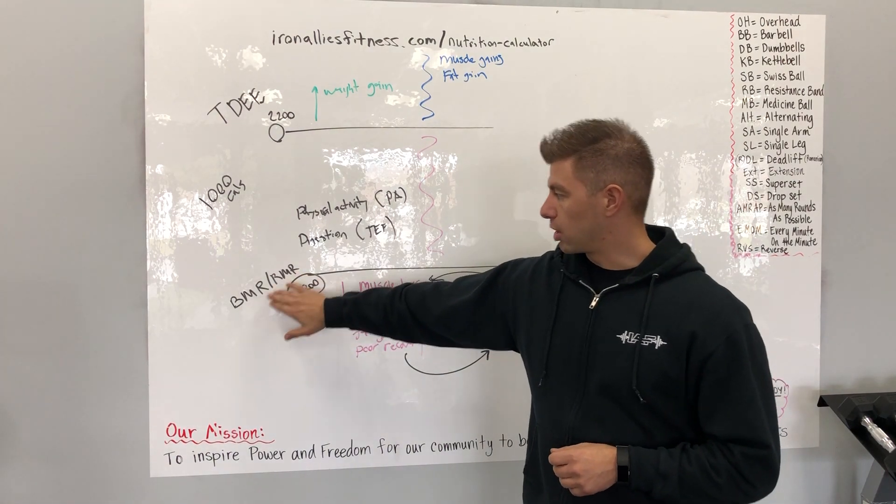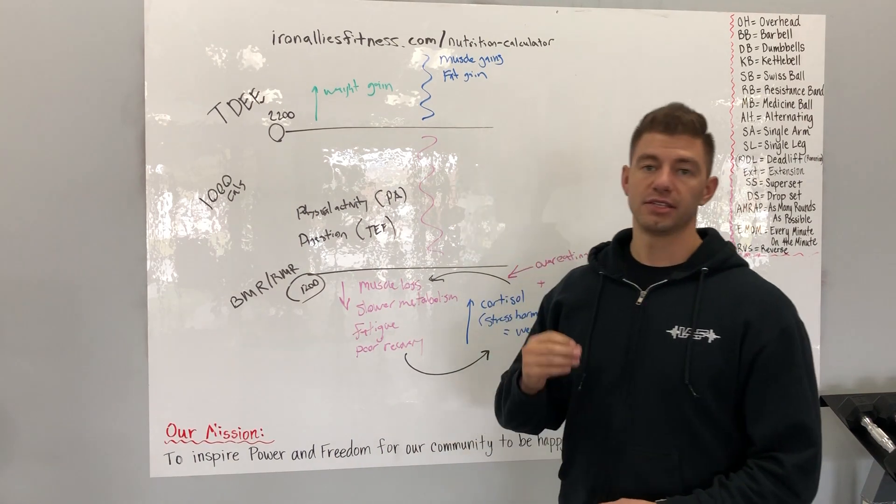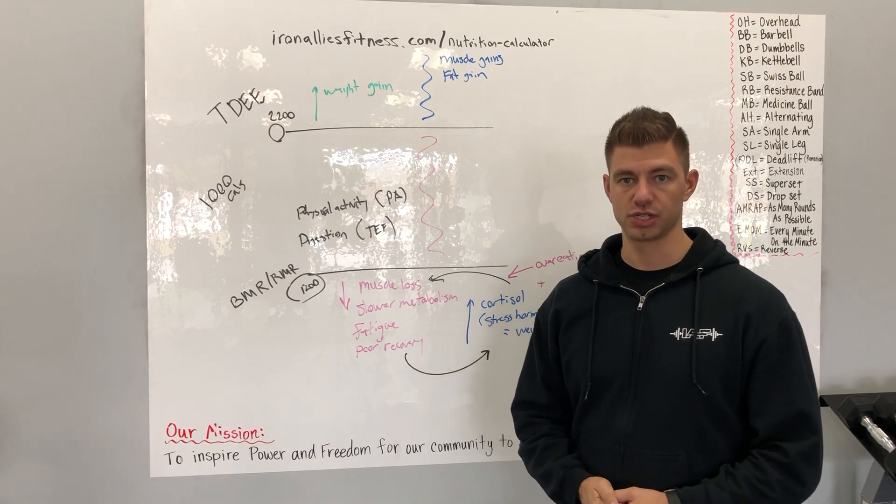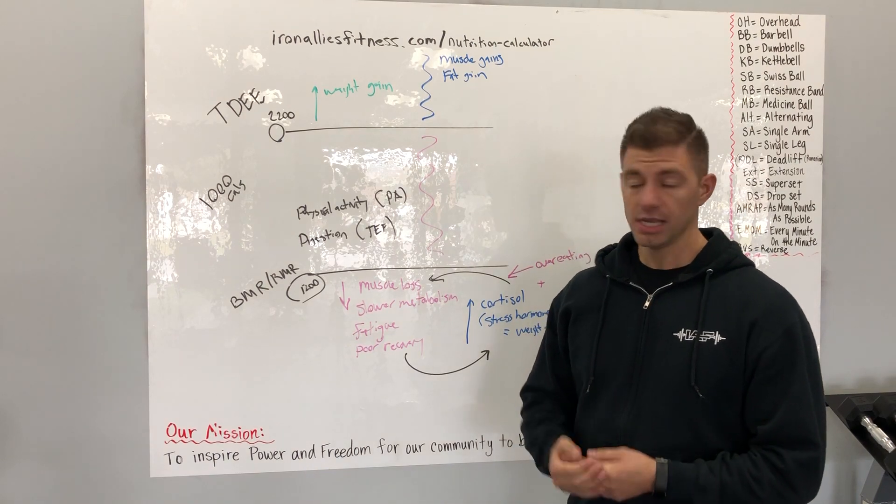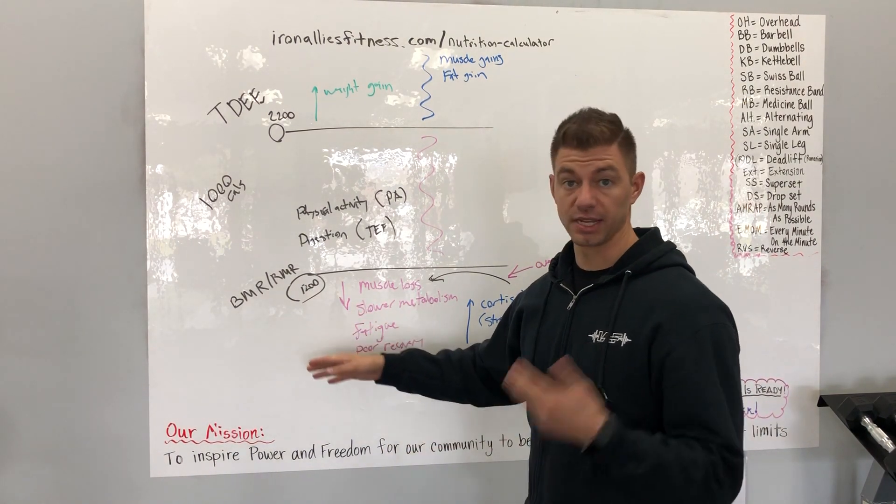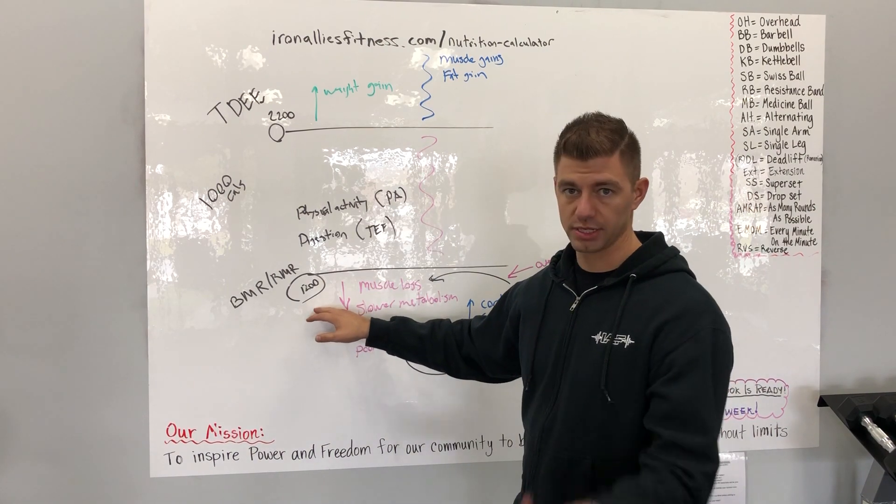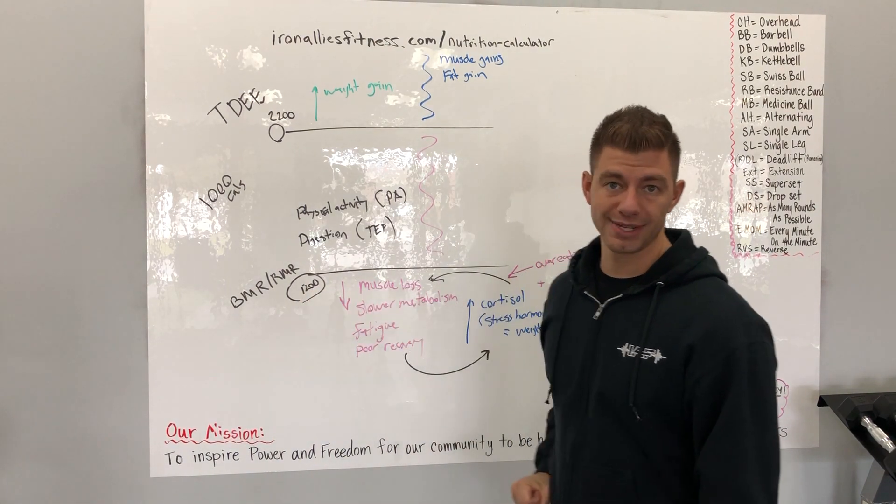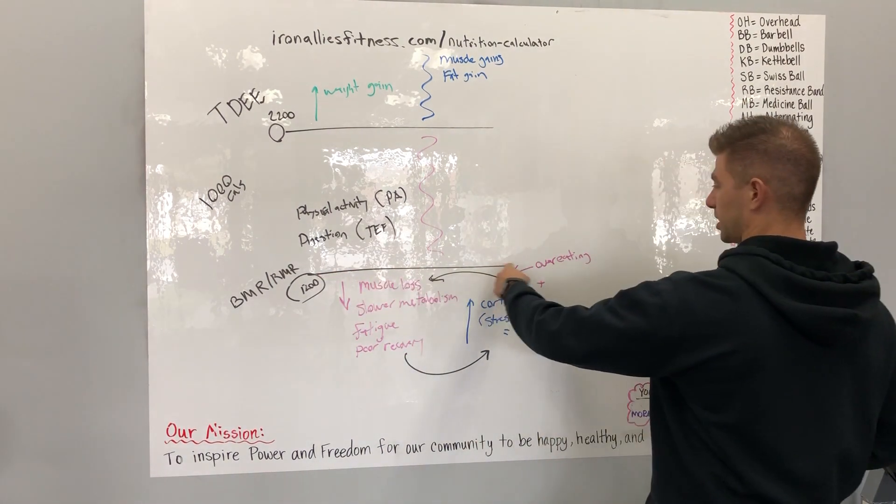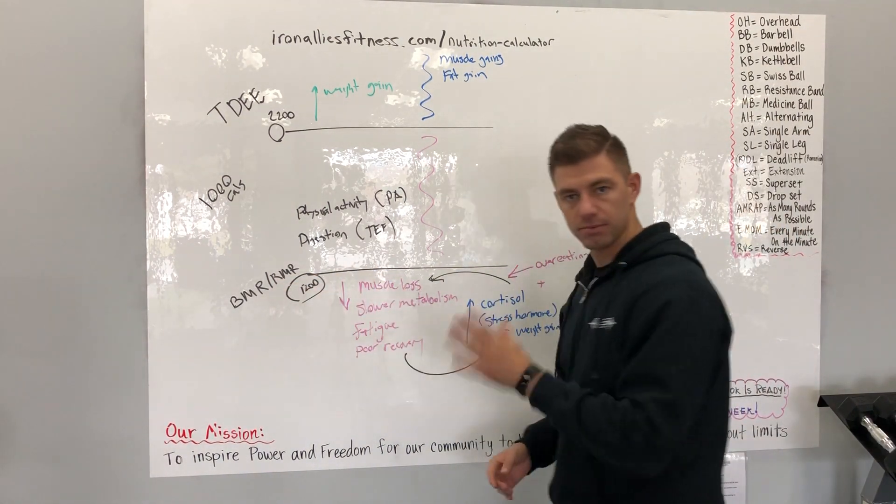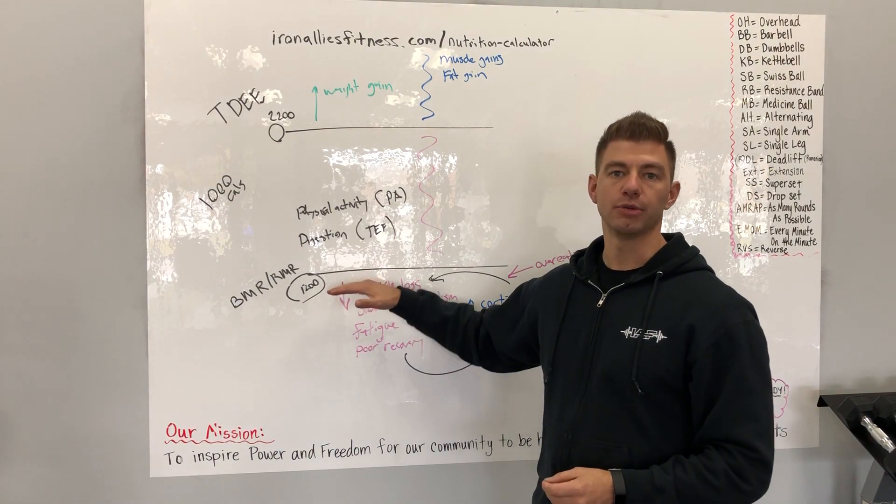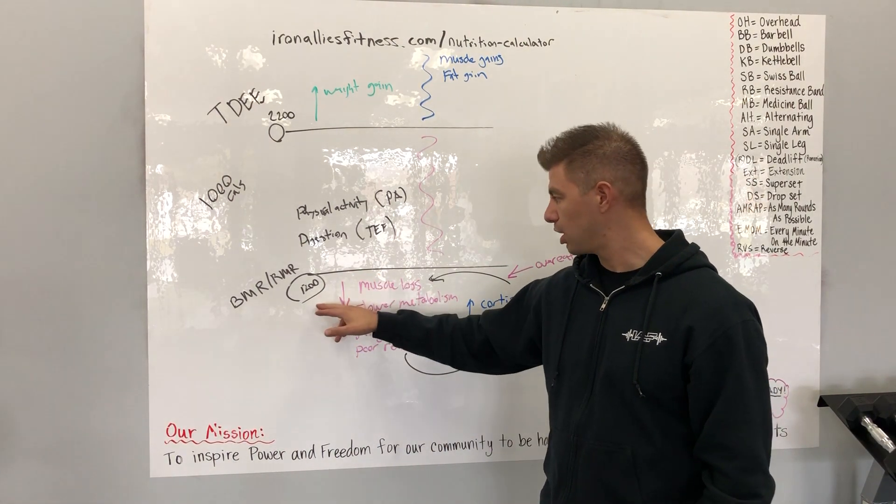BMR or RMR is basal metabolic rate or resting metabolic rate. This is the minimum daily calories that you need to consume in order to sustain a healthy metabolism at your current body composition level. This is how many calories you're gonna burn in a 24 hour period. Let's use this example - this client burns about 1200 calories a day just in a sedentary state. You can see how that is represented by this line right here. The reason I say it's the minimum, not the maximum, is because there's things that happen in your body when you chronically eat below your basal metabolic rate.